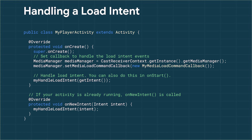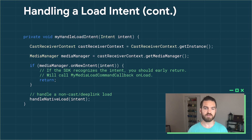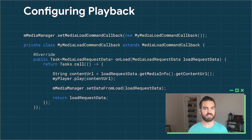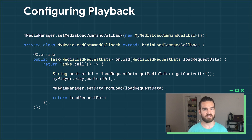Here's an example of properly handling the load intent in a player activity. On create, you'll want to set the media load command callback to handle the load events. In both onCreate and onNewIntent, you should handle the intents being fired to see if they are load intents from the Cast SDK. Using the media manager, you can check this intent using onNewIntent to see if it's coming from Cast Connect. If it is, simply return early and it'll be passed to the media load command callback, and onLoad will trigger when the intent has been parsed. If not, continue handling your non-Cast intent like you normally would. The onLoad method takes in the MediaLoadRequestData object, which is the same kind of load request you would normally get on your web receiver and contains the same information. Parse the load request like usual, passing the information to your player to start playback and set the data on your media manager. You should now have your content playing natively on your Android TV device.